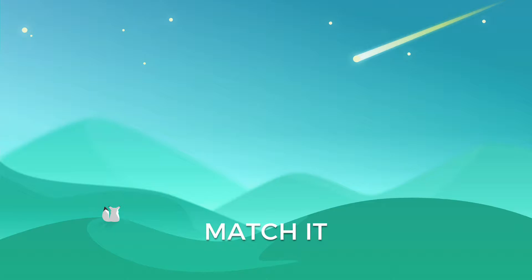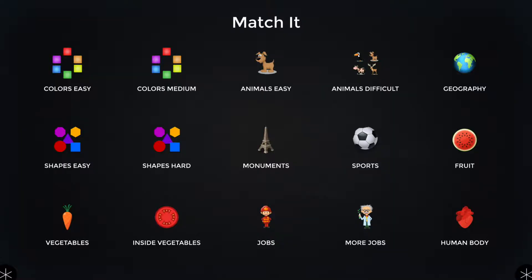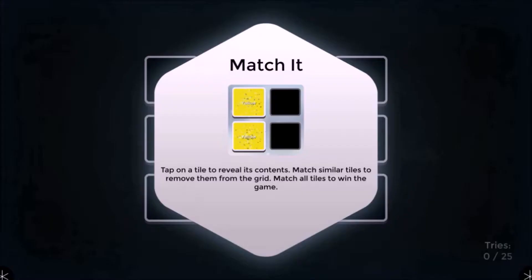We will now take a look at the Match It app. Tap on the Match It icon to open it. Select any of the pre-loaded themes to start the game. You are presented with a Help screen at the start of the game. Tap anywhere to dismiss it.